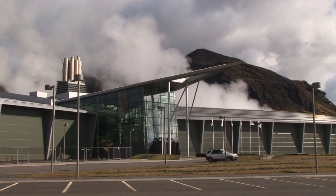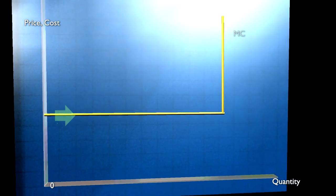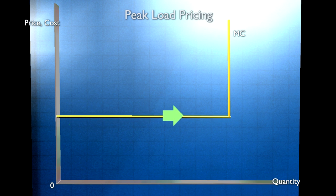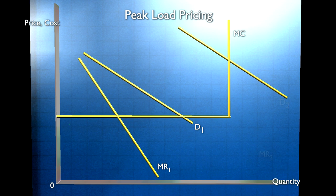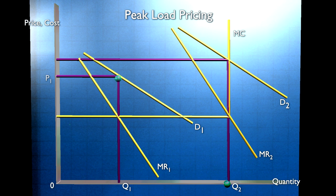Firms with high capital costs such as electricity utilities face a capital constraint and a marginal cost curve like this. Using existing capital, the marginal cost is low until the capital constraint is reached, at which point the marginal cost becomes vertical, showing that the next unit of production can only be produced at enormous cost with new capital. D1 is the demand curve off-peak and D2 is the demand curve at the peak. The profit-maximizing price off-peak is P1, and the profit-maximizing price at peak time is P2, limiting the quantity demanded to Q2. The difference in price is not price discrimination because it doesn't reflect differences in demand elasticities — it reflects differences in the amount of demand.